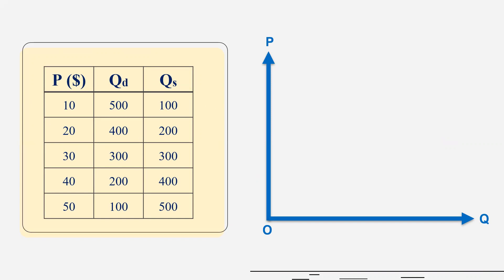On x-axis, we have quantity and on y-axis, we have price. D is the demand curve, which is downward sloping, and S is the supply curve. These two curves intersect each other at point E. So E is our equilibrium point, and at this point price is OP. So OP is our equilibrium price and OQ is our equilibrium quantity.